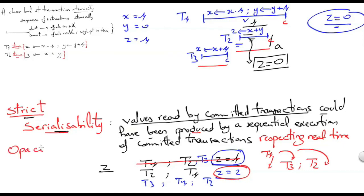The property of opacity is a strong variant of strict serializability that says values read by transactions, be they committed or aborted, could have been produced by a sequential execution of committed transactions respecting real-time. This would mean that the value of z should never be 0 even if the transaction that is reading it eventually aborts. This is a stronger variant which has an impact on how we implement transactional monitors and transactional memory.